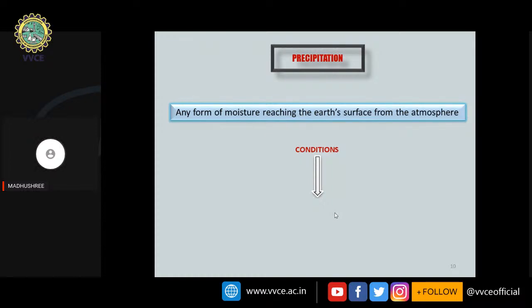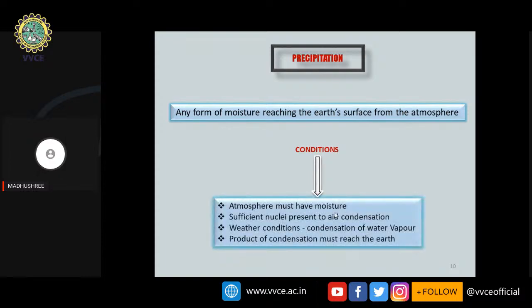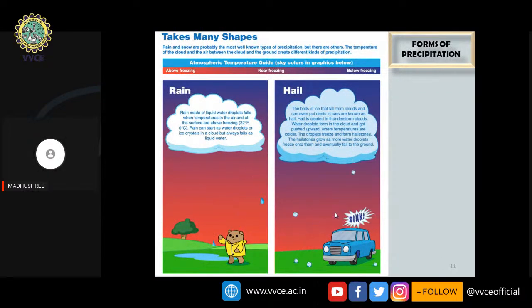Any form of moisture reaching the earth's surface from the atmosphere is known as precipitation. The minimum conditions for precipitation to form are: the atmosphere must have moisture, sufficient condensation nuclei must be present, and a feasible weather condition must exist so that condensation of water vapor occurs and the product reaches the earth.